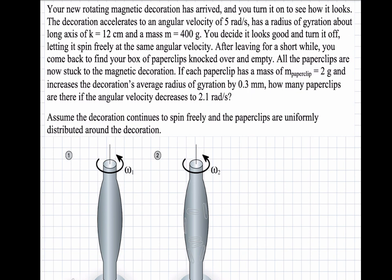The moment of inertia has changed, so the angular velocity also changes. We're given this angular velocity of 2.1 radians per second. Given that each paper clip weighs two grams and increases the average radius of gyration of the whole ornament by 0.3 millimeters, how many paper clips were added?